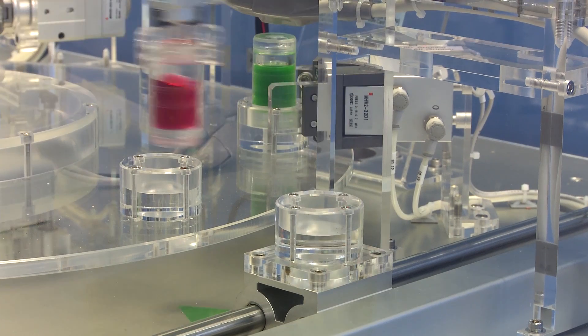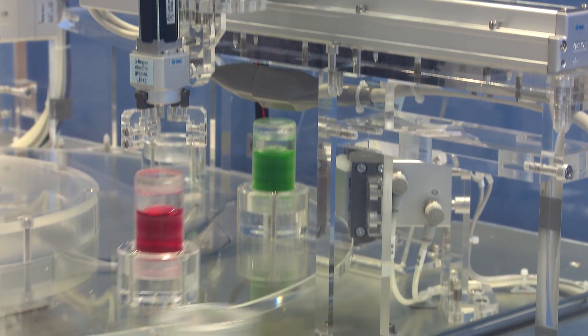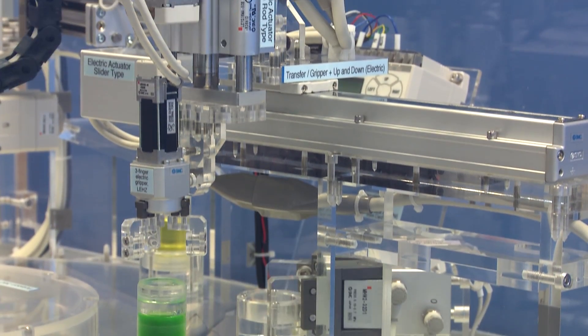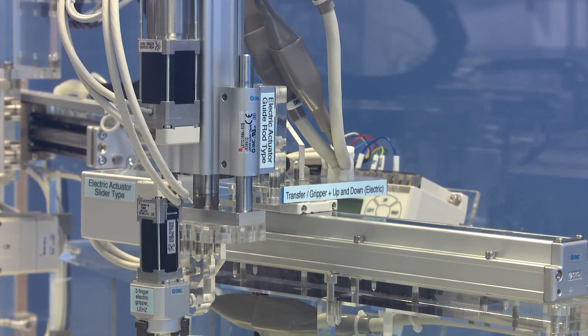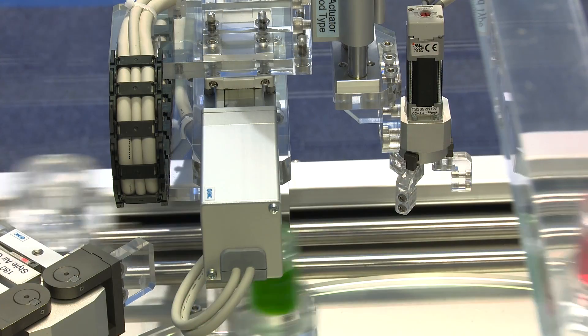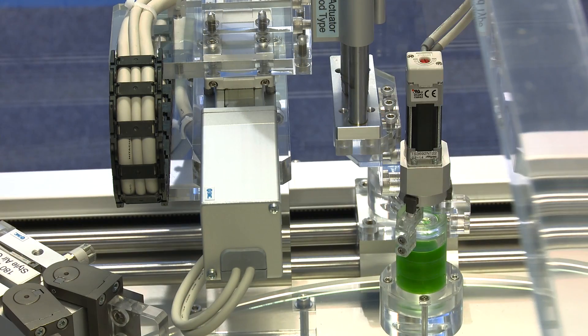Transitioning from there, we have our second station. Our second station is a pick and place system simulated solely with electric actuators. We have the LEF series, which is our slide table, LEY and LEH, which are gripper and rodded cylinder.